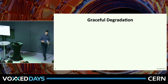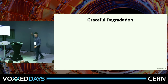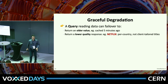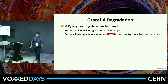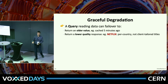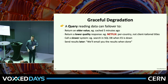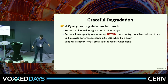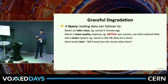What is graceful degradation? If you're trying to retrieve data from a system that is down, you could serve an older value, or return lower quality data. Imagine Netflix: if the recommendation service is down, you could show recommendations per country rather than ones tailored to the user profile — lower quality, but still good enough. Or you could call a slower system: if Elasticsearch is down, query the SQL database instead. You could even tell the user we'll send the results via email when done.